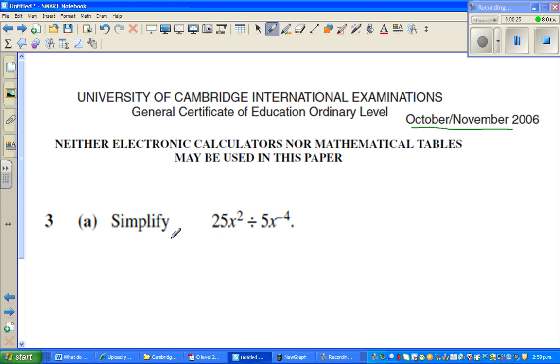So simplify question number 3: 25x squared divided by 5x to the power of negative 4. So this is same as 25x squared divided by... how will you write? So x to the power of negative 4 is 1 over x to the power of 4.